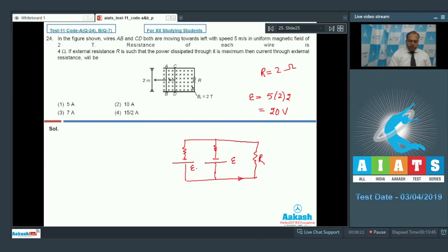So if I find out what is the value of I, then the value of I is equal to E equivalent. The value of E equivalent is 20 as both are in parallel divided by total resistance of the circuit. So we know that the equivalent resistance of these two are 2 Ohm and 2 Ohm and 2 Ohm are in series. So this is 4 Ohm. So it comes out to be 5 ampere. So option 1 is the correct answer.